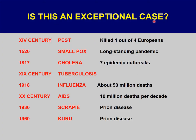Is this an exceptional case? Clearly not. This kind of pandemic has taken place throughout our history as a species. We have had plague, smallpox, cholera, tuberculosis, several influenza pandemics, and AIDS, all of which have killed quite a number of people. For example, the influenza pandemic killed about 50 million people, and AIDS caused about 10 million deaths per decade in the first 20 years after being introduced into the human population. So it's not an uncommon or unique case, and we will find these kinds of cases also in the future.